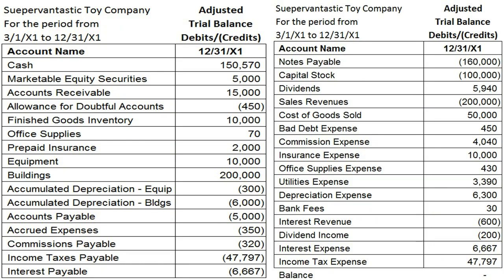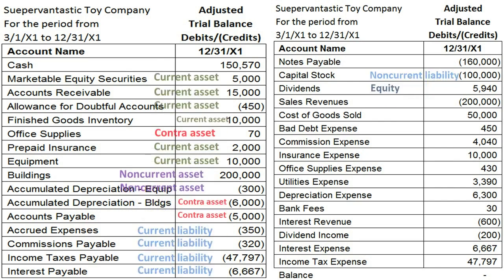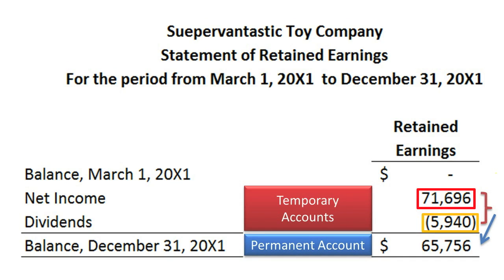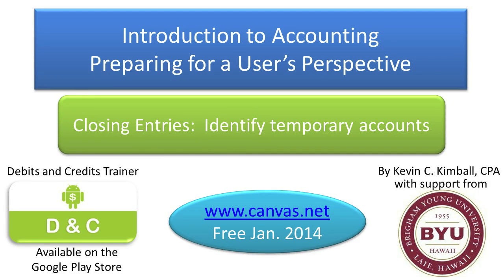As a review, you absolutely need to be able to classify all accounts as permanent or temporary. Permanent accounts appear on the balance sheet; temporary accounts appear either on the income statement or on the statement of retained earnings. All revenues, expenses, and dividends will impact the Retained Earnings account when they are closed into it. Anything between the beginning balance and the ending balance on the statement of retained earnings represents a temporary account that needs to be closed. Temporary accounts only relate to a given accounting period and must be closed out to zero so a new period can start fresh. Good luck on the quiz.